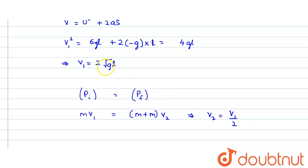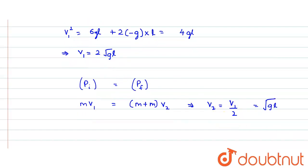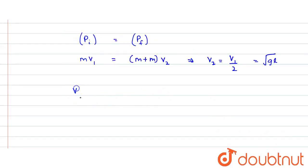We know v1 = 2√(gl), so dividing by 2 gives v2 = √(gl). This is the common velocity of both blocks after the string becomes taut. The center of mass would also be moving with this common velocity v2 = √(gl), since both identical blocks have the same velocity.